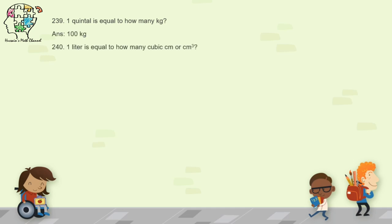Question 240: one liter is equal to how many cubic centimeters? One liter equals 1,000 cubic centimeters, which in short is called 1,000 cc — cc means cubic centimeter.